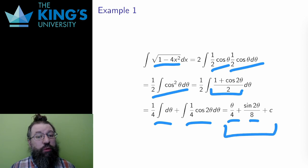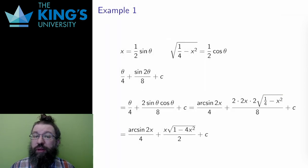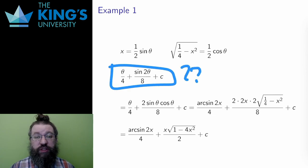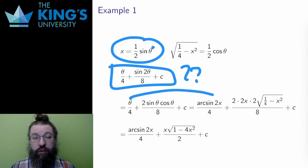Now I need to reverse the trig substitution. Often this can be the trickiest part. x equals 1 half sine theta was the substitution, and if I solve for theta in that, I get theta is arcsine of 2x. So that lets me replace theta with arcsine 2x.